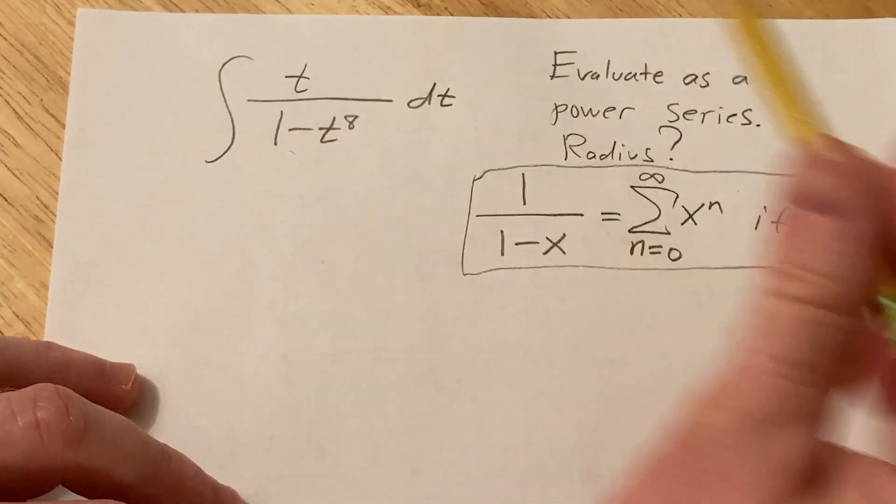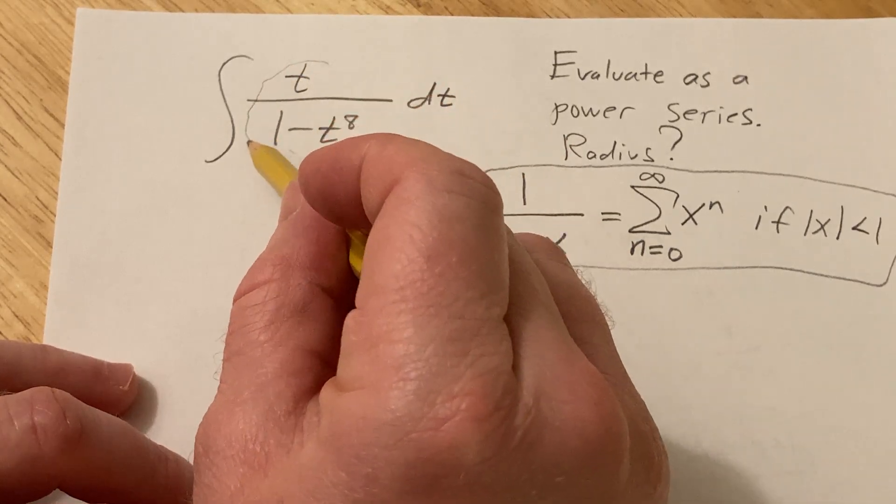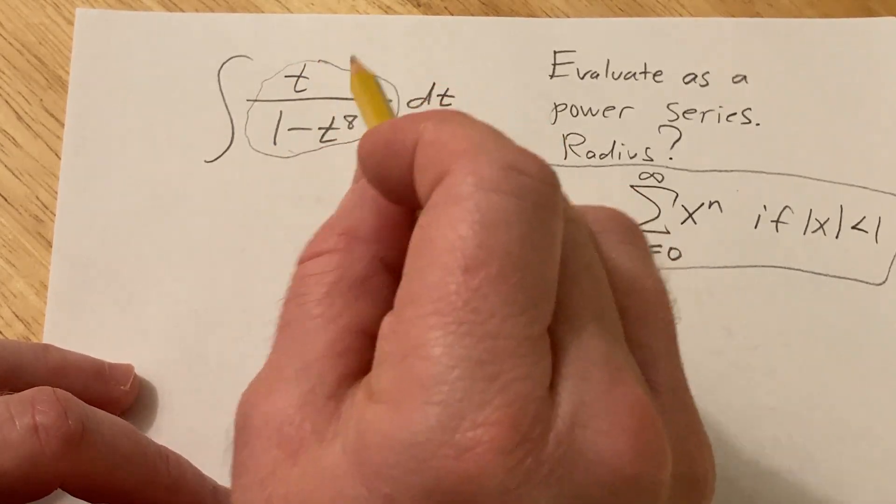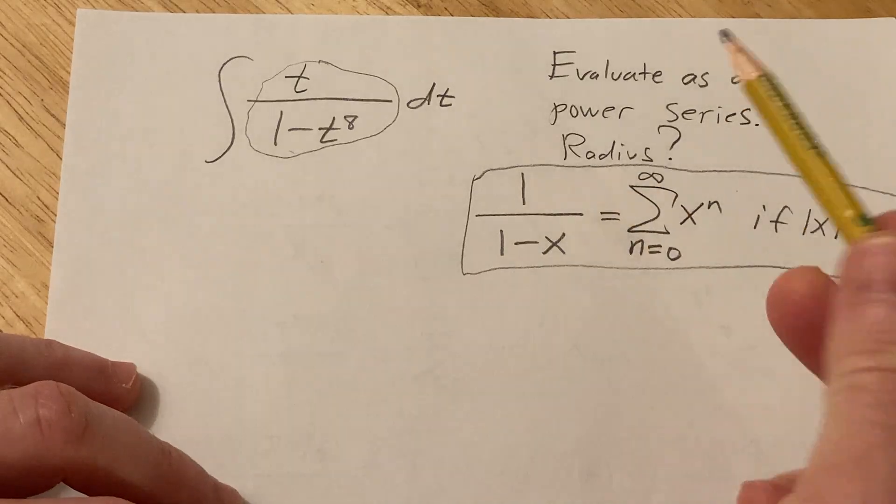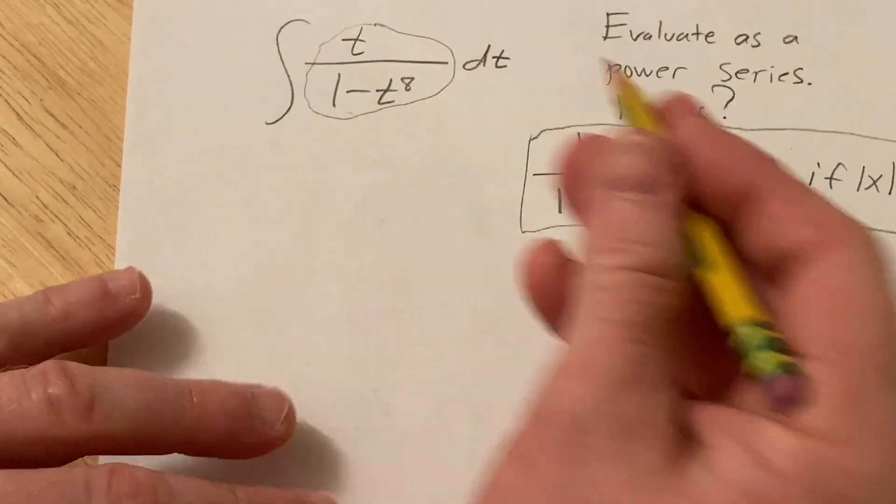The way I'm going to do it is to find an infinite series representation for this function and then we'll just integrate term by term. Should be pretty straightforward, let's just start doing it right away.